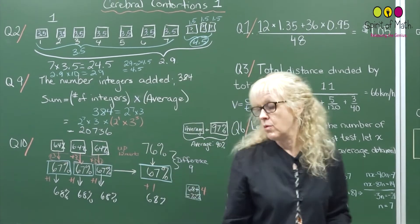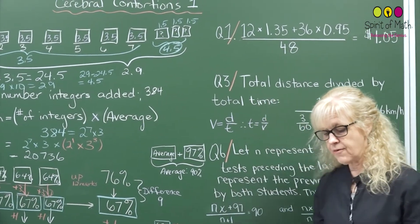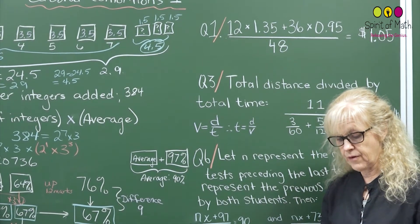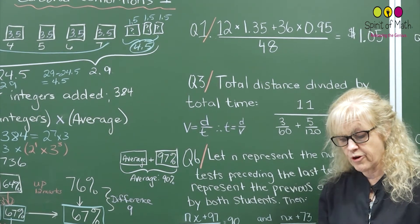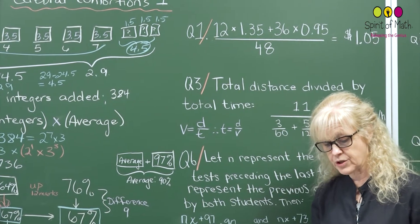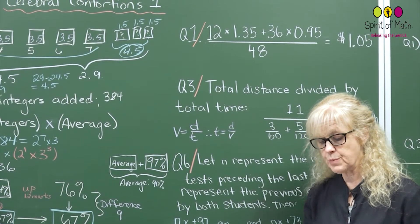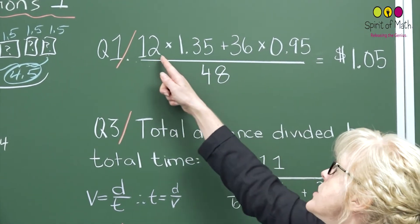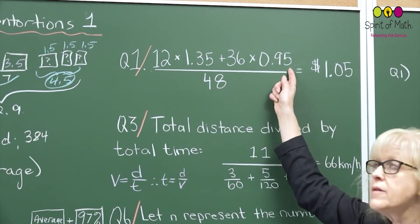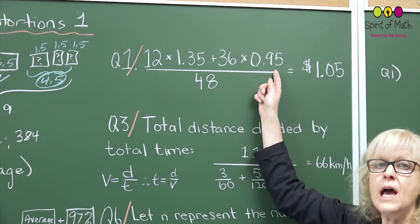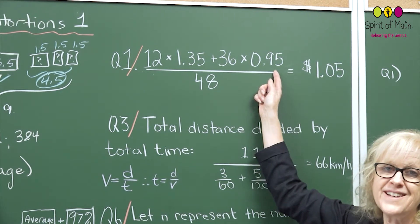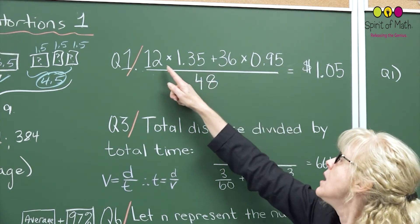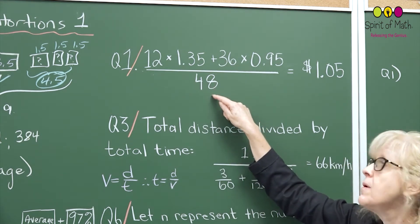Now let's go back to question number 1. A variety of energy bar regularly sells for $1.35, but for one week they were on sale for 95 cents. George purchased a dozen of these bars before the sale began, and then bought three dozen more during the sale. What was the average price George paid per bar? You want to know the total price — 12 at $1.35, and 36 at 95 cents. That gives you the total, and you want to find the average per bar, not per dozen. That's where sometimes people made mistakes. There were 48 bars total, because 1 dozen plus 3 is 4 dozen, so 48 bars.